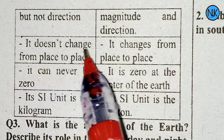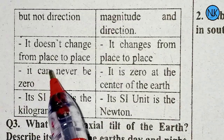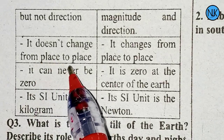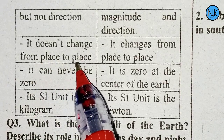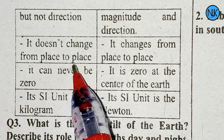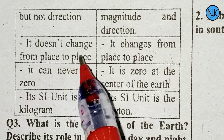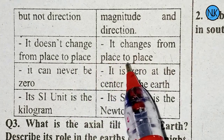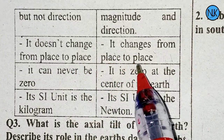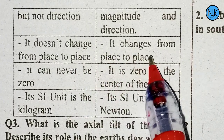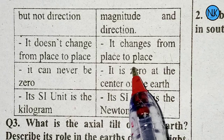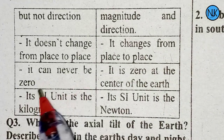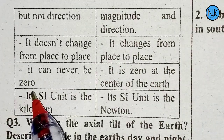Mass does not change from place to place and it can never be zero. Weight, however, changes from place to place.